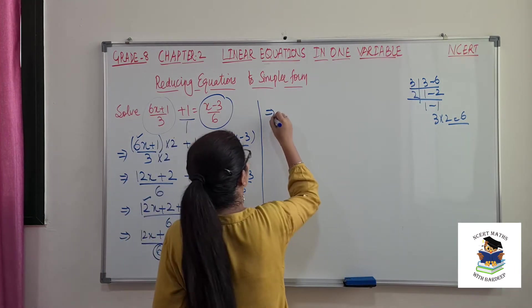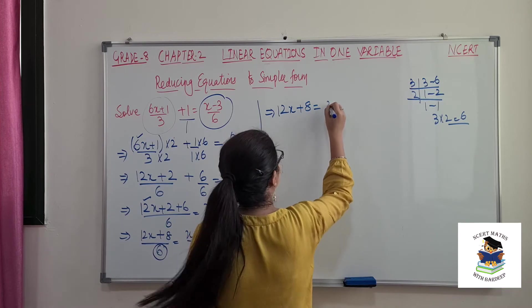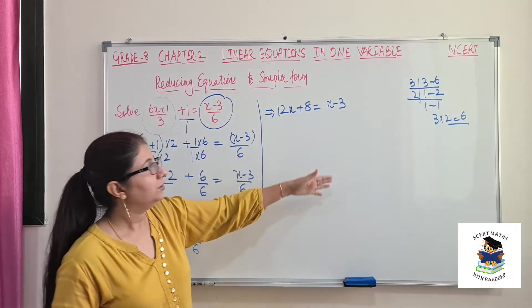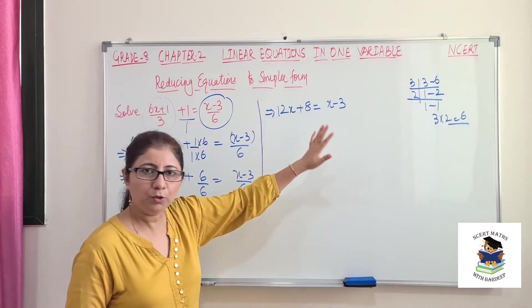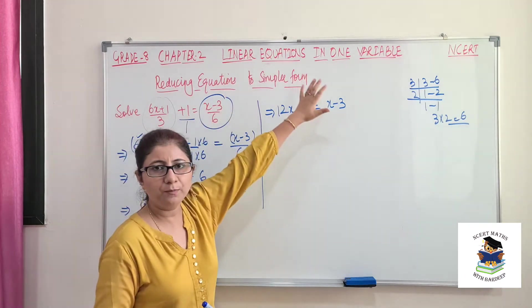So no need to do that step directly. We can ignore this and write the numerators. So once I write, this should be 12x + 8 = x - 3. So now this is our simple linear equation.